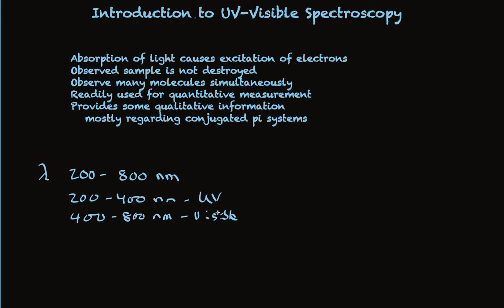UV-Vis is readily used for quantitative measurement, which is the most important aspect of UV visible spectroscopy as used in today's laboratories. This is achieved through the application of a very simple equation: the absorbance measured as light passes through the sample is equal to the concentration of the sample times a specific number times the path length. The path length is typically set at one centimeter, so its numerical value is one and it drops out.